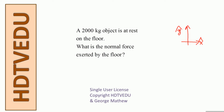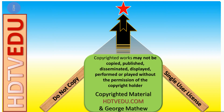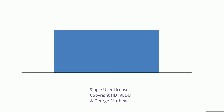A 2000 kg object is at rest on the floor. What is the normal force exerted by the floor? Here is our non-zero mass, and whenever we have a non-zero mass we look at the forces acting on it. Here is our object on the floor — what acts vertically up and what acts vertically down? We definitely know that gravitational force always acts vertically down.